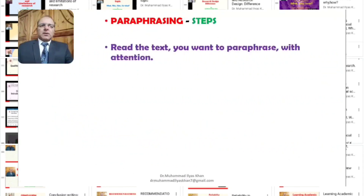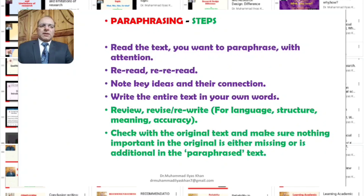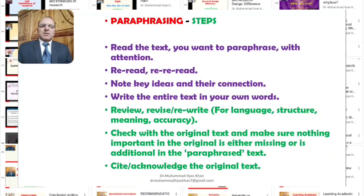Now, what are the general steps in the process of paraphrasing? In order to paraphrase a text, we need to read the text first — and we need to read it with full attention. In many cases, one reading is not enough, and so we need to re-read the text in order to get to the main ideas and to the connections between different ideas in the text.